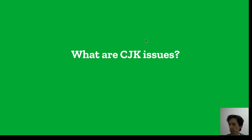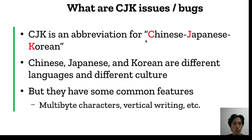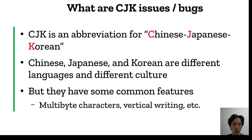Let's get started. What are CJK issues? CJK is an abbreviation for Chinese, Japanese, Korean. Chinese, Japanese, and Korean are different languages with different cultures, but they have some common features.